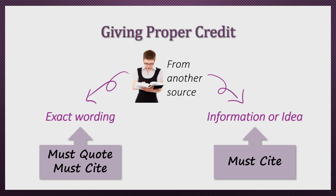In other words, a citation tells the reader that the information or idea came from somewhere else, and a quotation tells the reader that the words also came from somewhere else. The original source, by the way, doesn't necessarily have to be written sources. Even personal verbal communications need to be cited and/or quoted where appropriate. Let's go through a few examples.